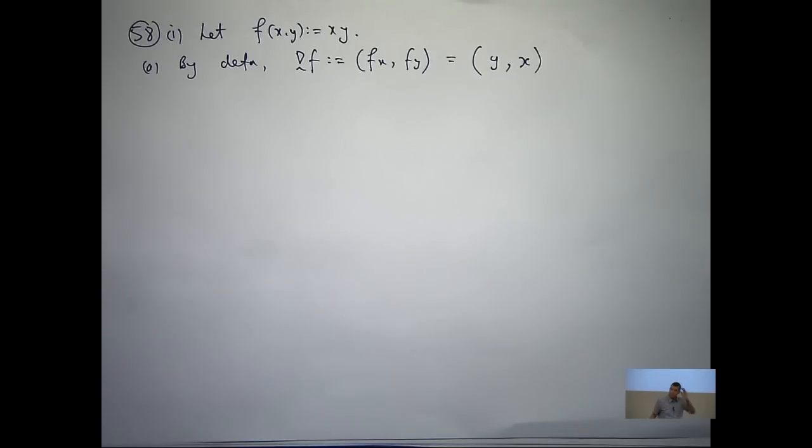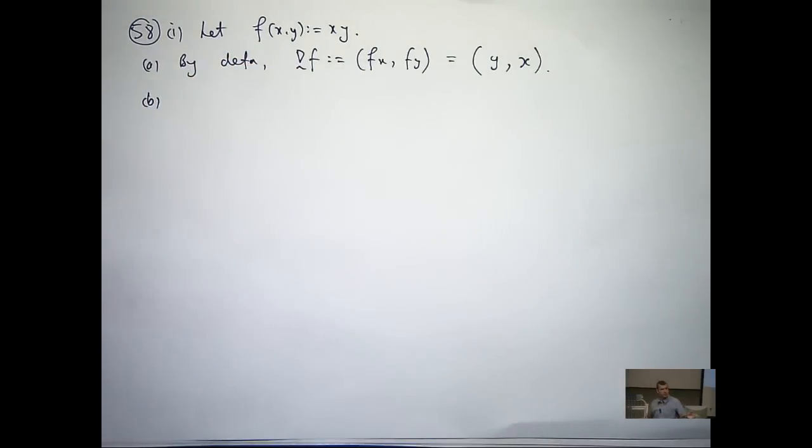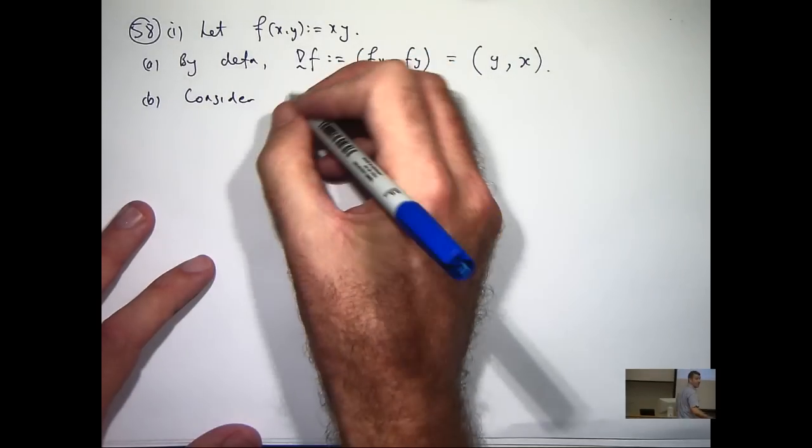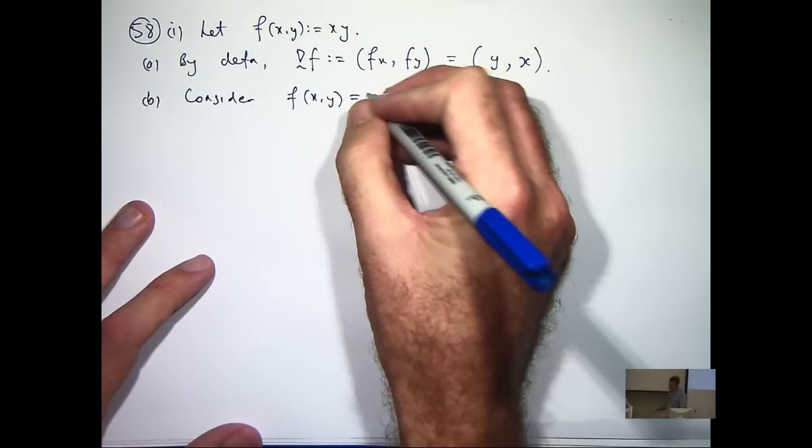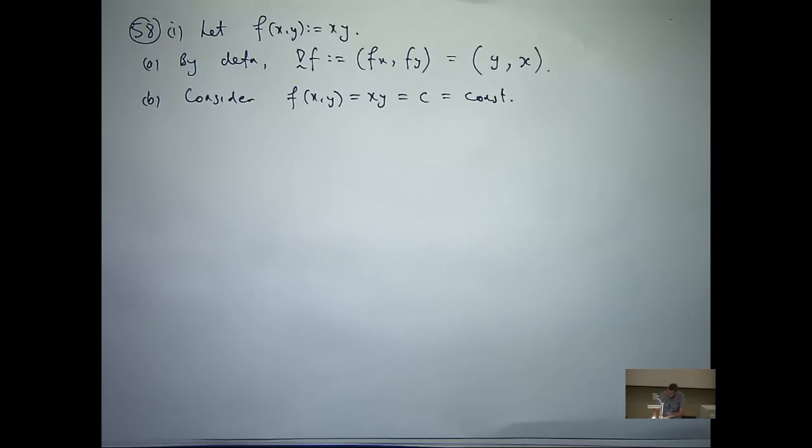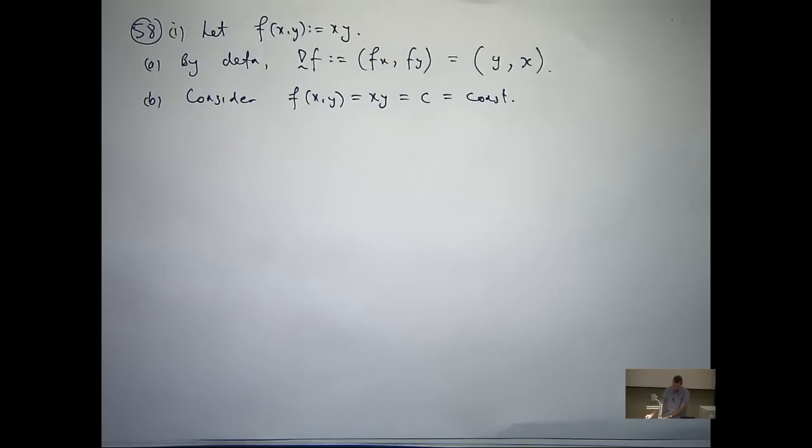The second part of the question was graph some level curves of this function. So we'll just be graphing them in the xy plane. So consider xy equals a c, which is a constant. So let's start off simply. If c is 0, what does that give you? Well, it gives you xy equals 0. So either x is 0 or y is 0. So that means you're going to get the coordinate axes in the case c equals 0.